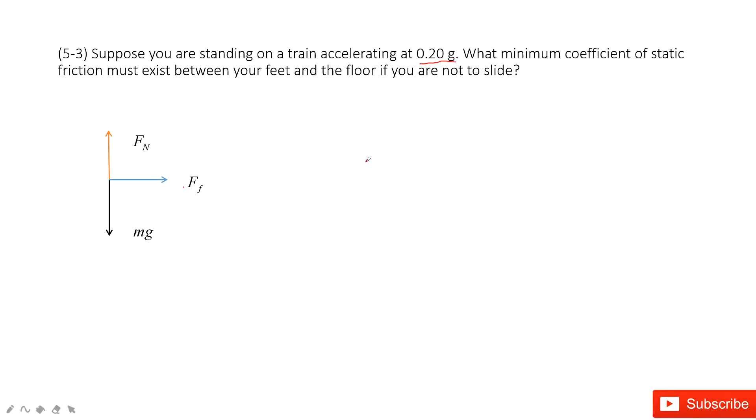In this one, we can consider Newton's second law to write equations. First, we consider the vertical component. We have the normal force minus the gravity equals zero. And then we consider the horizontal component. We have the static friction must equal mass times acceleration. This acceleration is 0.2g to make the person and the train relatively stationary.